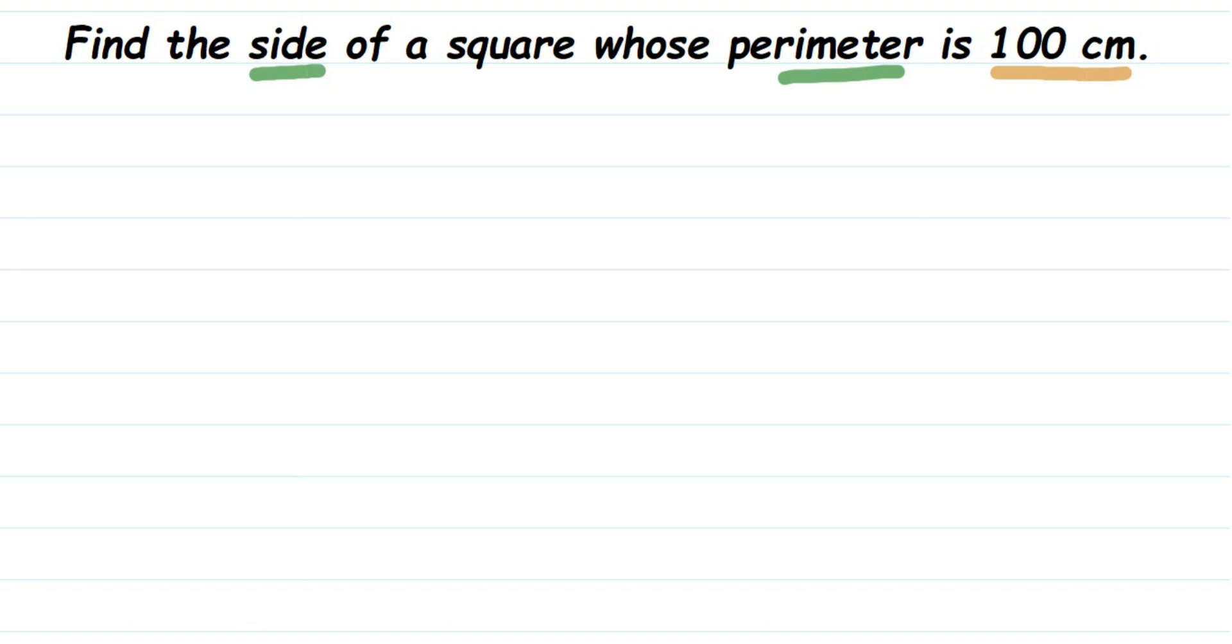So let's write down what we know from the question. We know the perimeter, so perimeter is equal to 100 centimeter. What we have to find out? We have to find out the side of the square.